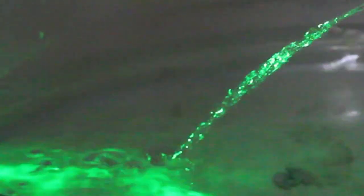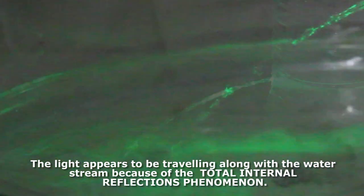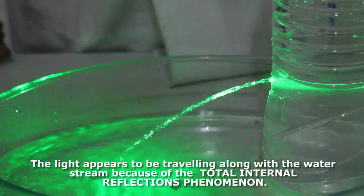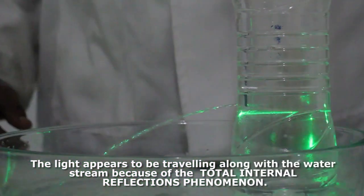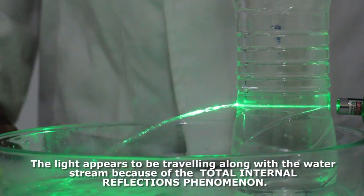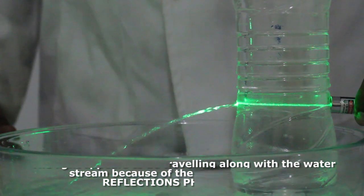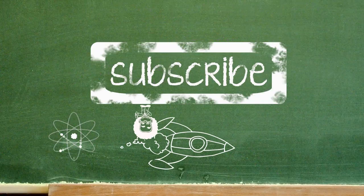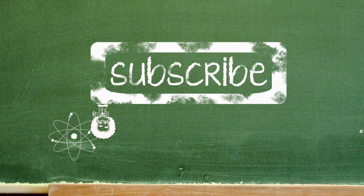At the end of the stream there is a lot of turbulence, so the continuous reflection chain breaks or scatters down and the laser light gets scattered. Because of this phenomenon called total internal reflection, the light appears to be traveling along with the water stream. Remember to like this video and subscribe for more cool science.